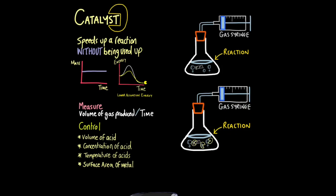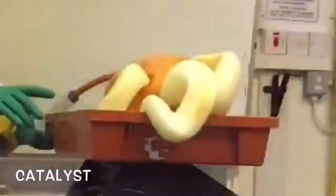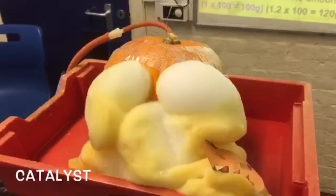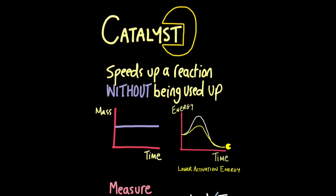Finally, how do we investigate a reaction using a catalyst? A catalyst is anything which speeds up a reaction without being used up in the process. Some exams give you graphs involving catalysts and ask which graph represents the use of a catalyst — you must look for one which has a horizontal line, indicating the mass of the catalyst isn't changing throughout the reaction. That's the point: it doesn't get used up or changed in the reaction.